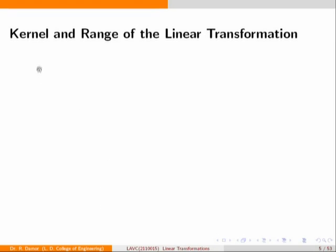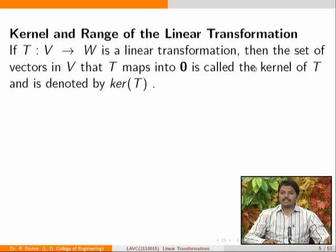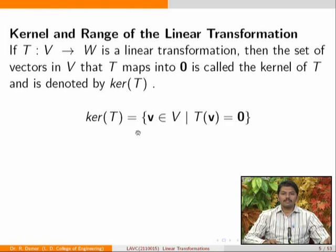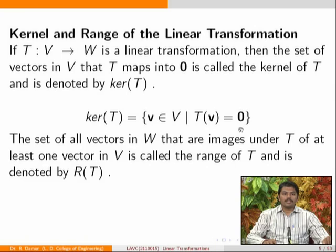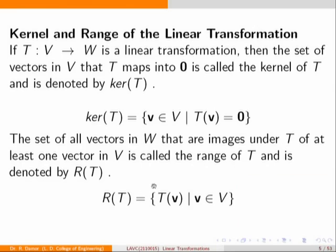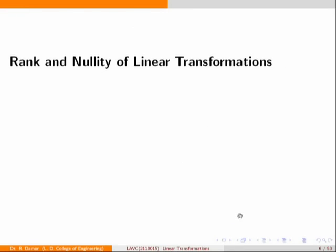In the second lecture we defined the kernel and range of a linear transformation. For T from V to W, the kernel of T is the set of all vectors in V whose image is the zero vector in W: kernel(T) = {v ∈ V : T(v) = 0}. The range of T is the set of all vectors T(v) such that v belongs to V.